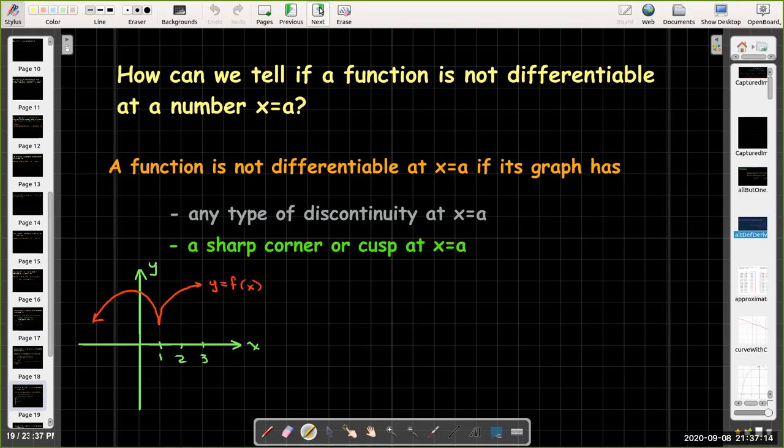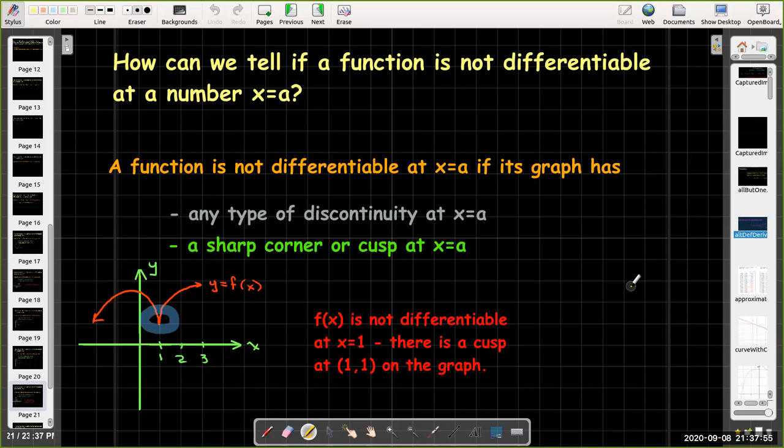What is meant by a cusp? A cusp, you kind of think of a heart shape. So it comes down smoothly, not as a straight line, but with a curve. And then there's a different curve that meets it at a single point. So that's what we call a cusp. And you can see that at that point, if you're thinking in terms of the slope of the tangent line, on the left branch, the slope is negative. And then we jump to having a positive slope. So in this case, f(x) is not differentiable at x equals one because we have the cusp there.